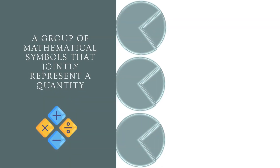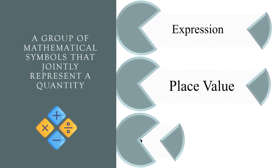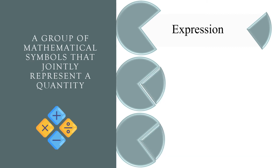A group of mathematical symbols that jointly represent a quantity. Expression, place value, or sequence? The correct answer is expression.